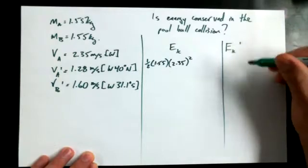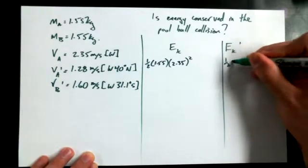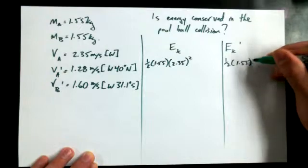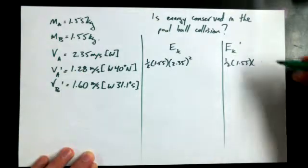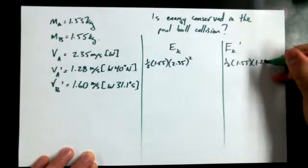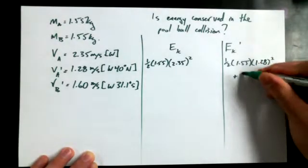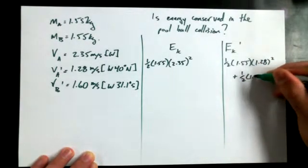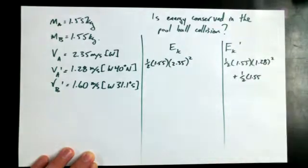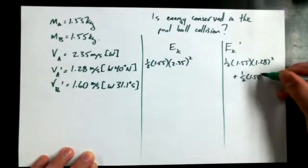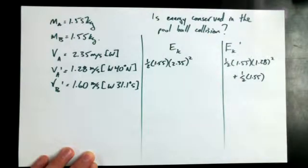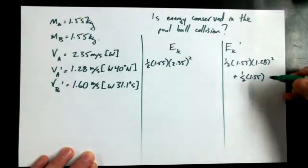And then in the after scenario, we have one half times 1.55 times for mass A, 1.28 squared, plus the kinetic energy for mass B, which is one half times the mass, 1.55. No direction, no count, it's a scalar. Kinetic energy is just a scalar, no direction required. There's no such thing as kinetic energy up or something like that.